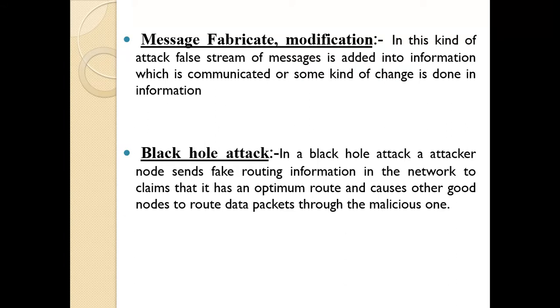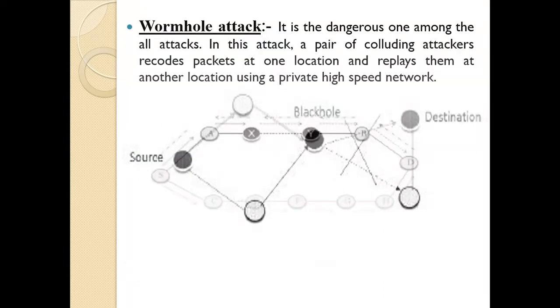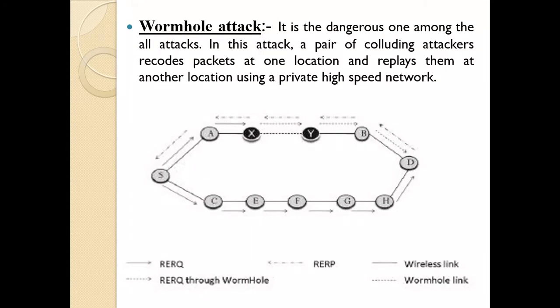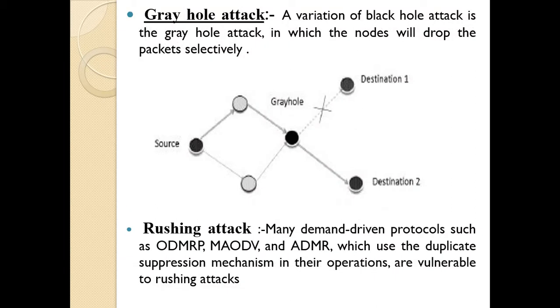Black hole attack: in a black hole attack, the attacker sends fake routing information to a node, claiming it has the optimum route, and causes other good nodes to route data packets through the malicious node. Wormhole attack: this is the most dangerous among all attacks. In this attack, a pair of colluding attackers record packets at one location and replay them at another location using a private high-speed network. Gray hole attack: a variation of the black hole attack in which a node selectively drops packets.